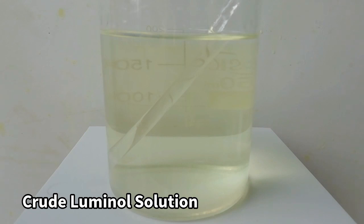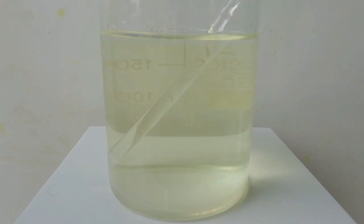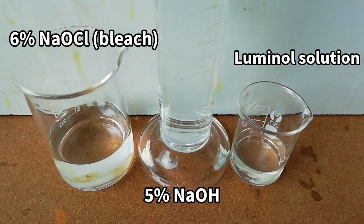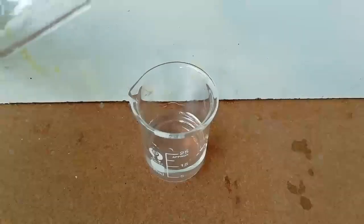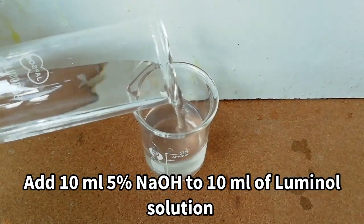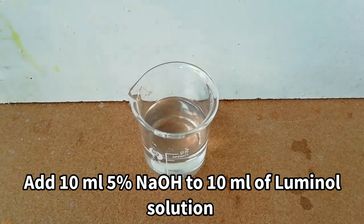To test the product we have already prepared we need sodium hydroxide, household bleach, and luminol solution. First I mix 10 ml of luminol solution with 10 ml of 5% sodium hydroxide solution. Now to get the glow add some bleach.